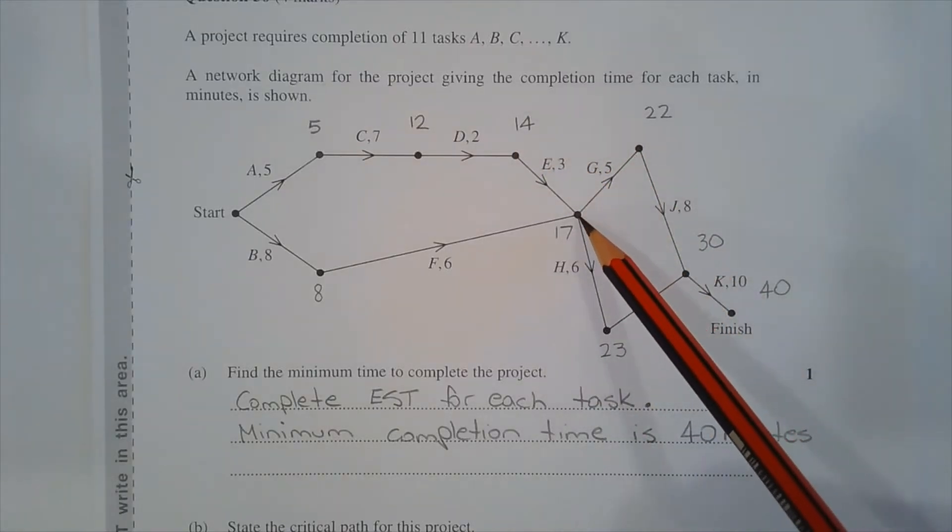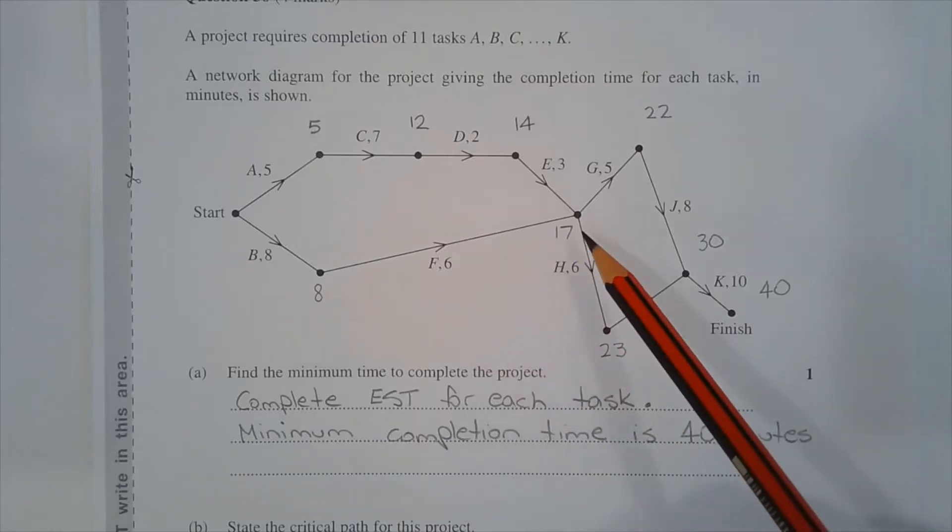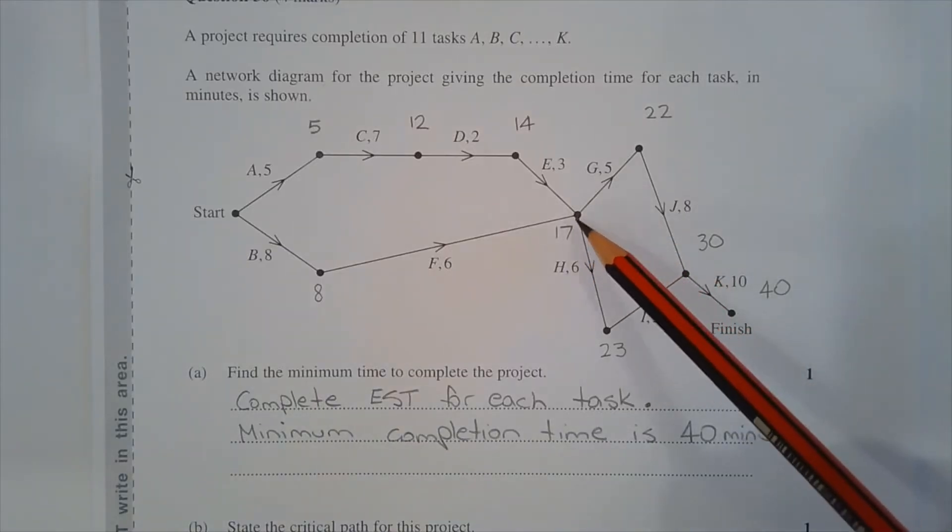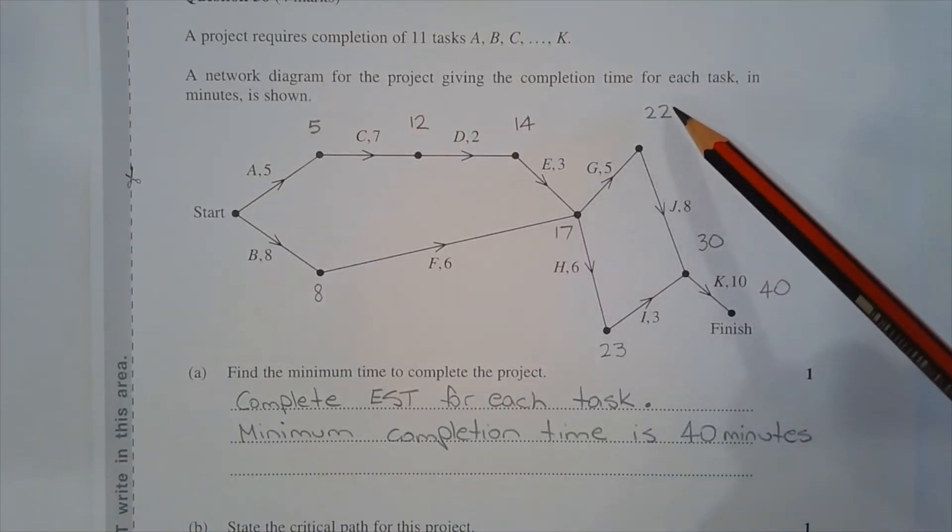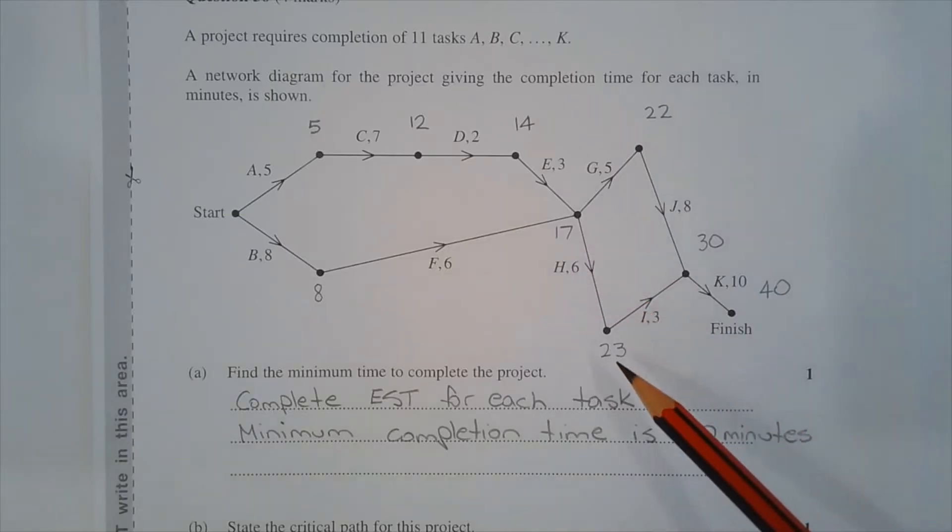Now 14 plus 3 is 17, but 8 plus 6 is 14. We write the higher of the two numbers when determining the earliest start time. Now from this point, 17 plus 5 is 22, 17 plus 6 is 23.